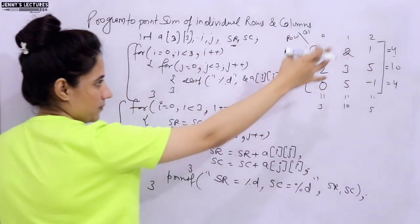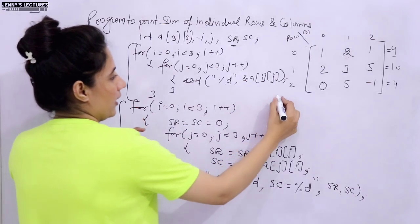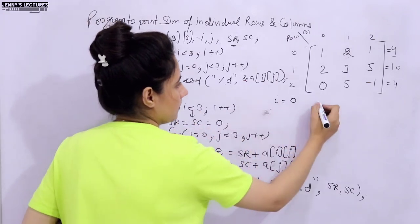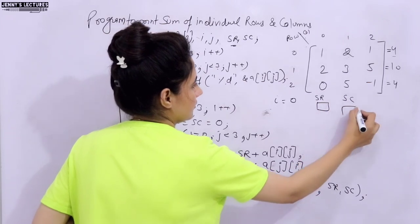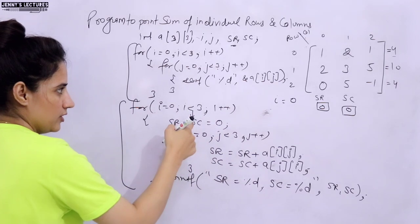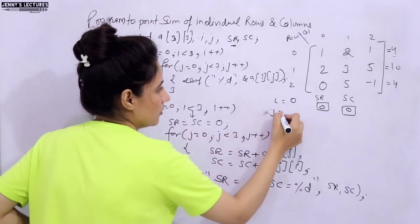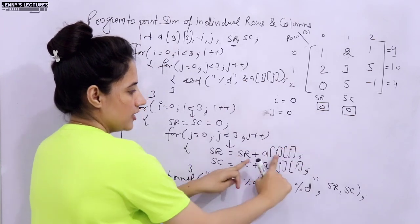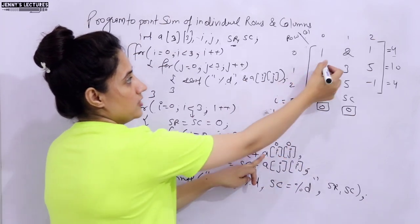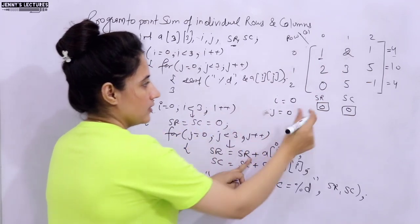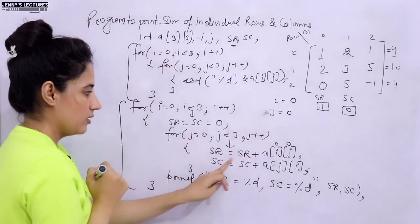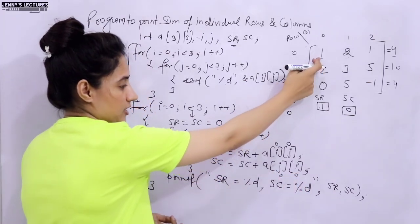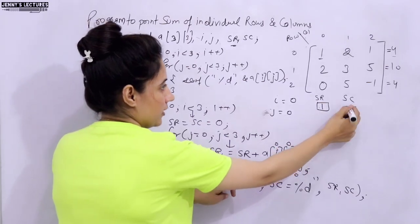Now let's dry run this program. When i = 0, condition true, SR and SC are initialized to 0. Then j = 0, condition true. SR = 0 + A[0][0] = 0 + 1 = 1. SC = 0 + A[0][0] = 0 + 1 = 1. Then j = 1: SR = 1 + A[0][1] = 1 + 2 = 3. SC = 1 + A[1][0] = 1 + 5 = 6.